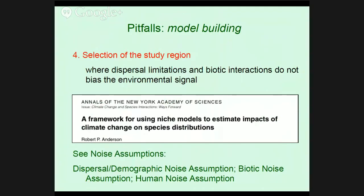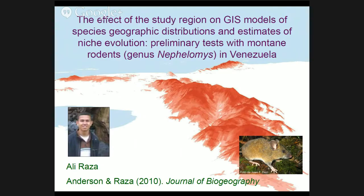Moving on to the third pitfall: selection of the study region, about which a lot has been written. At the end of the day, we want to work in a study region where dispersal limitations and biotic interactions do not bias our environmental signal. I invite you to look at the noise assumptions from the framework paper: the dispersal-demographic noise assumption, the biotic noise assumption, and the human noise assumption — I cite the various papers by groups that have really developed the theory in this area. Our contribution from my lab in this area was done by Lia Rossow a few years ago.